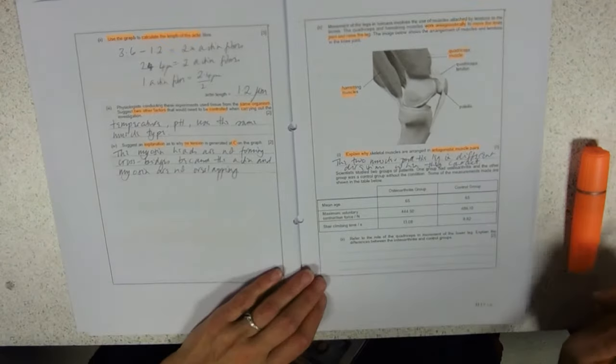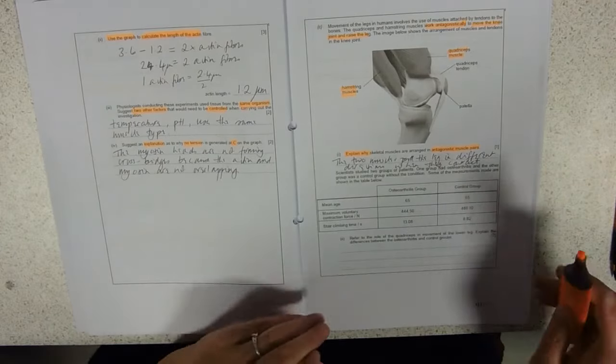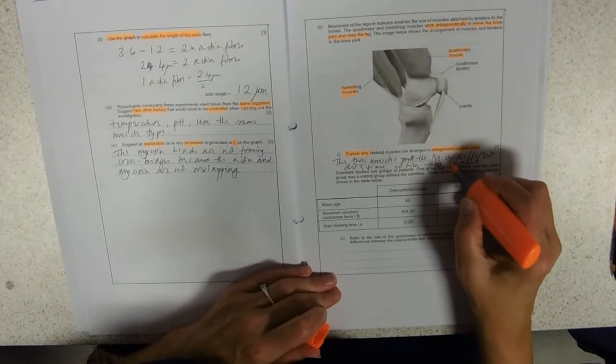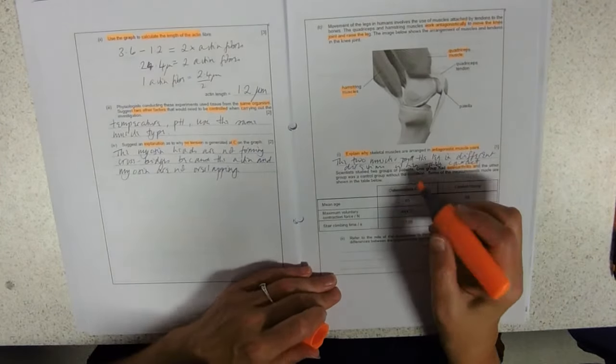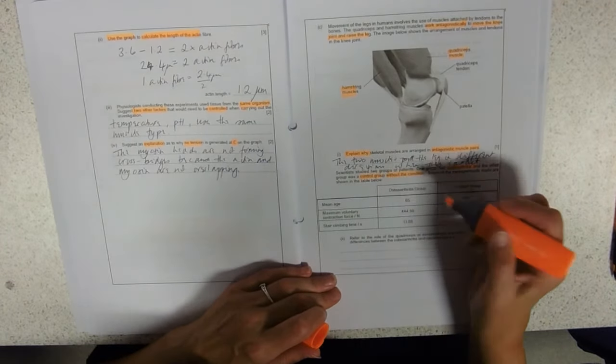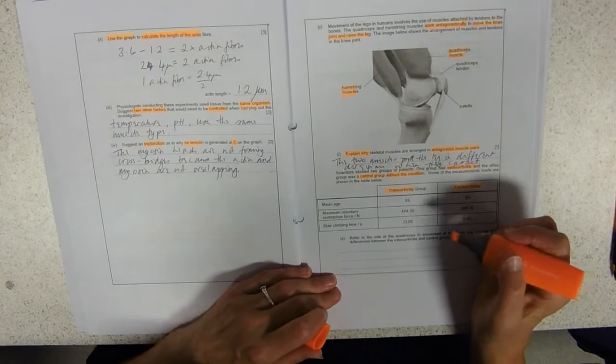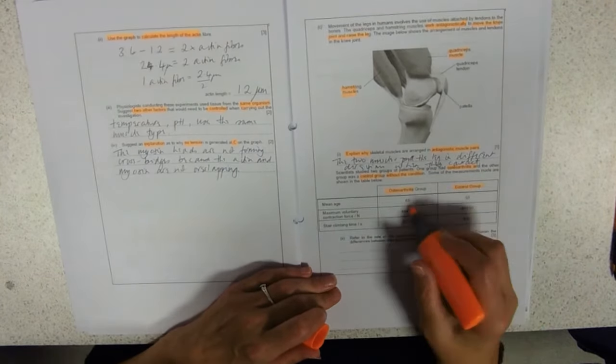Scientists studied two groups of patients. One group had osteoarthritis. And the other group was a control group without the condition. So we've got no osteoarthritis and the osteoarthritis. So we've got the age, they're both 65.